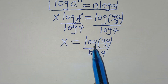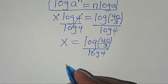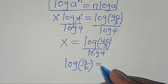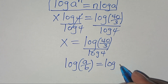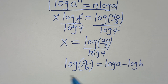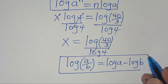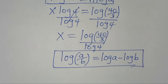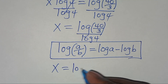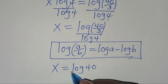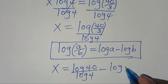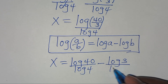The next step from here, log(40 over 3) is in the form of log(a over b), and this can be expressed as log(a) subtract log(b). Applying this property, x is equal to log(40) divided by log(4), subtract log(3) divided by log(4).